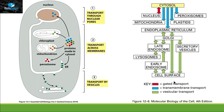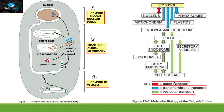By this way we can sort out three different types of transport systems. One transport system is through the nuclear pore, and that is called gated transport. The other transport is across the membrane, and that is called transmembrane transport. The third one is transport by vesicles, and that is called vesicular transport.